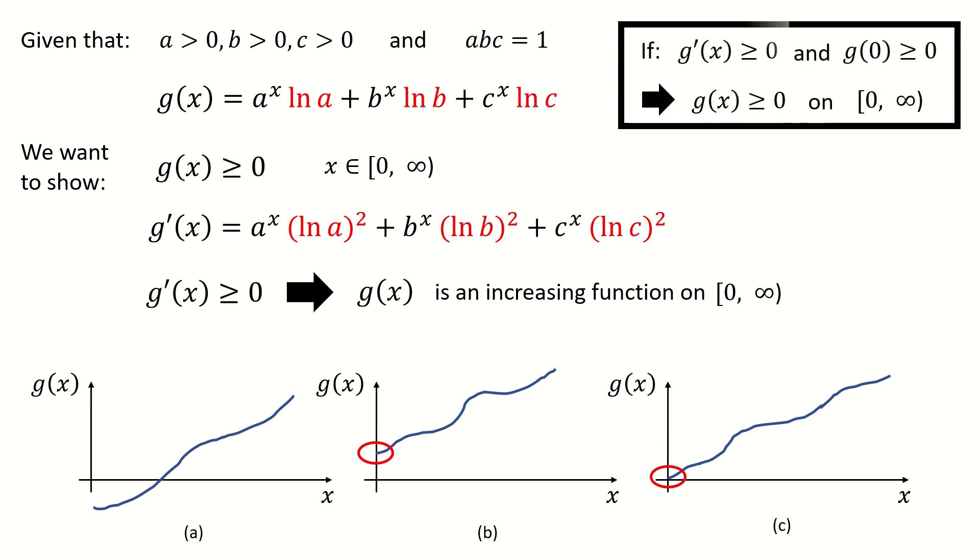I summarize the idea in the box. Now, we already got the derivative of g(x) is non-negative, which means g(x) is an increasing function. If we can show the value of g(0) is also non-negative, this means the g(x) function is non-negative on zero to infinity. Then we complete the proof. So I put the question mark here. We haven't done this step.